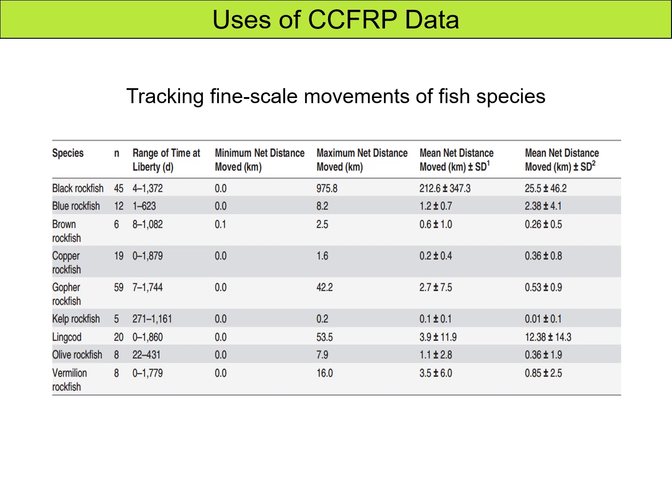Here's a summary of our tag recapture data from 2007 to 2017, the first 10 years of our CCFRP program. On the left you can see multiple different species which we have tagged and recaptured, with the most recaptures being gopher rockfish with 59 and black rockfish with 45. You can also see the wide range of liberty times, with the longest period being a copper rockfish recaptured 1,879 days later, or around five years. The maximum distance moved was 975.8 kilometers or 606.3 miles for a black rockfish.